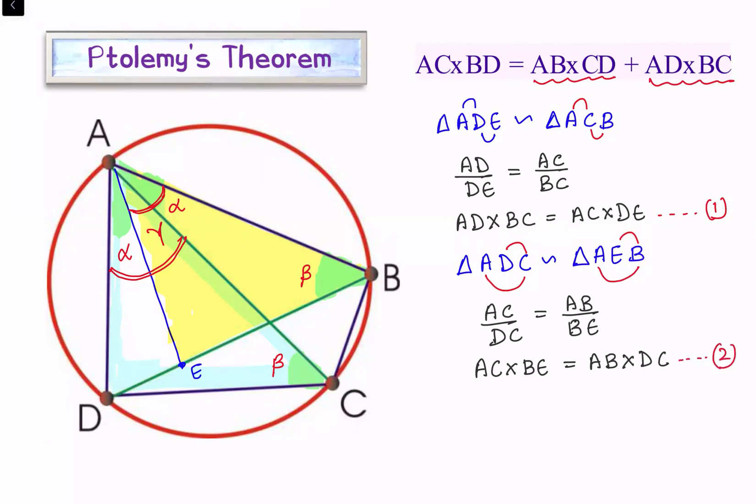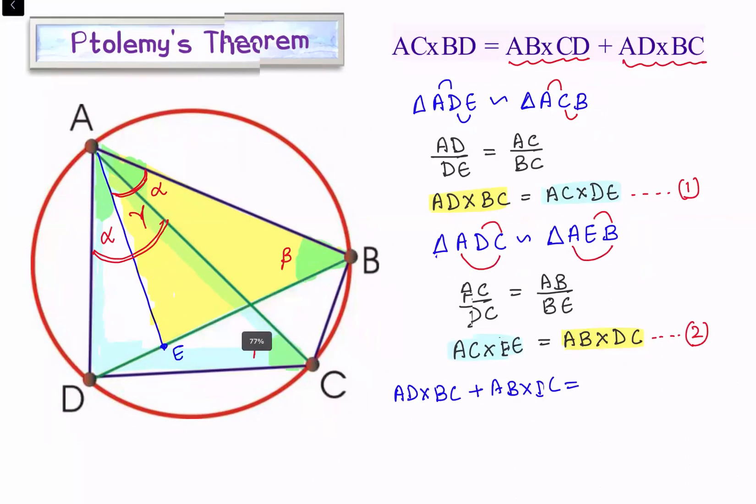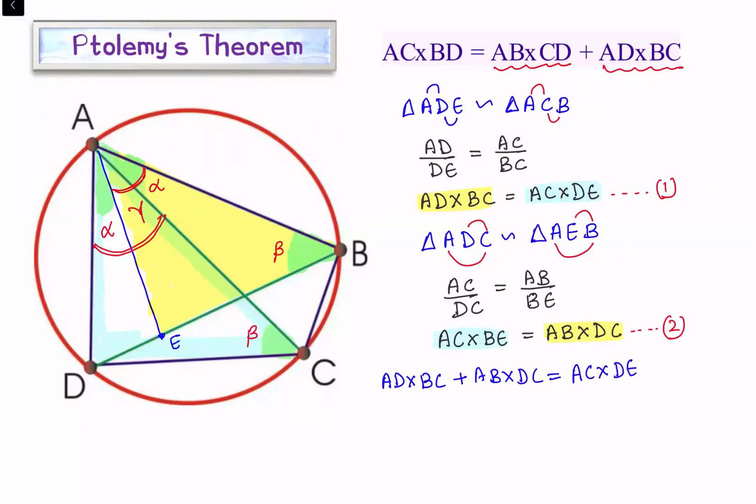Let's add them. We are adding AB times DC and AD times BC. Adding 1 and 2, we are getting AD times BC plus AB times DC equals AC times DE and AC times BE. This equals AC times DE plus AC times BE. AC will come out common, inside left is DE plus BE.